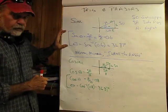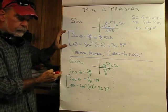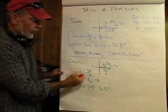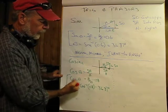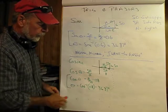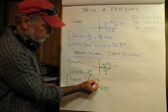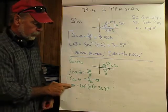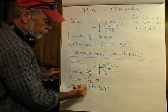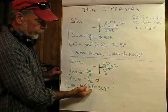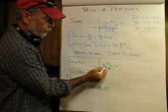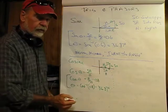These two equations are it for right angle trig review — got to know. Now let's look at the cosine function. Cosine is side adjacent to the angle divided by the hypotenuse. In this example, that's 8 divided by 10, which equals 0.8. And if we want to find the angle, we use the inverse cosine function: cosine to the negative 1 of 0.8, which comes out to be 36.87 degrees — the angle between the hypotenuse and the side adjacent.